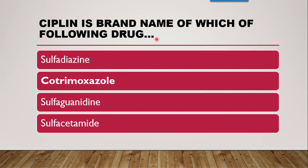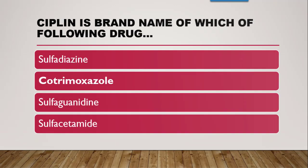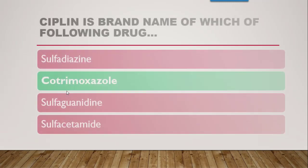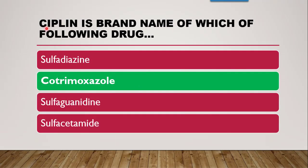Next question: Cipeline is the brand name of which drug — sulfadiazine, cotrimoxazole, sulfaguanidine, or sulfacetamide? The correct answer is cotrimoxazole. Cipeline contains cotrimoxazole, and its manufacturer is CIPLA.